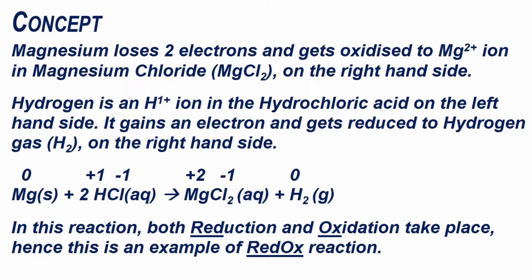Magnesium loses two electrons and gets oxidized to Mg2+ ion in magnesium chloride on the right-hand side.